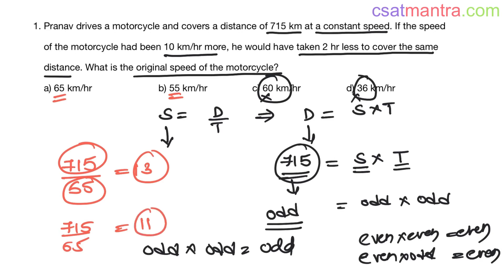It will take 11 hours to cover 715 distance at a speed of 65 kilometers per hour. And if you observe, from 55 to 65 the difference is 10, it's 10 kilometers per hour more. And from 13 to 11, it's two hours less. So our answer is 55 kilometers. If the speed had been 10 kilometers per hour more, you would have taken two hours less.